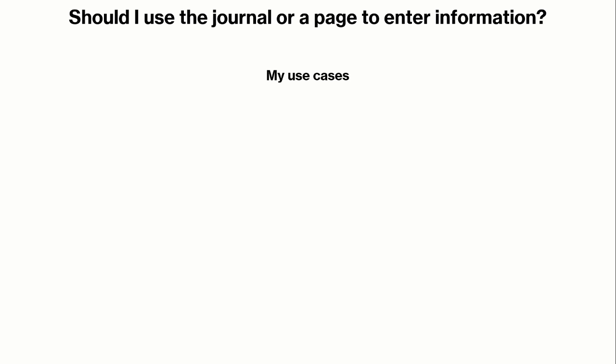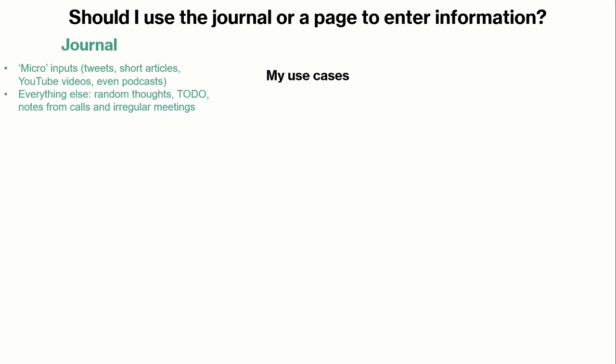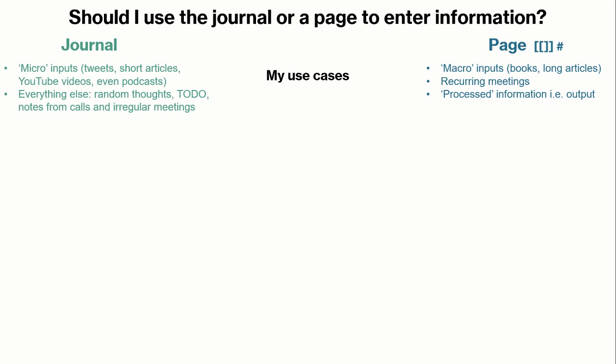I've evolved my use cases quite a bit recently. In my journal I put micro inputs — tweets, short articles, YouTube videos, podcasts, anything that's quite small and quick to input. Then I also dump random thoughts, to-dos, notes from calls, and irregular meetings into my journal. On pages I put macro inputs — books, long articles, anything weighty and dense — plus recurring meetings, so notes for regular team meetings are easily accessible. I also put all processed information and synthesized output on pages.